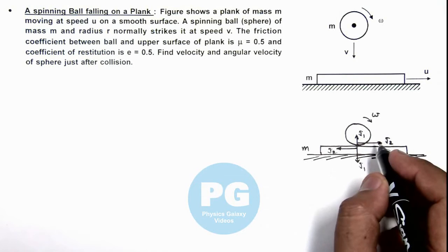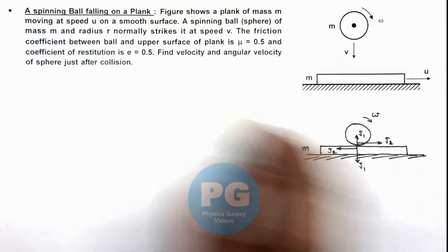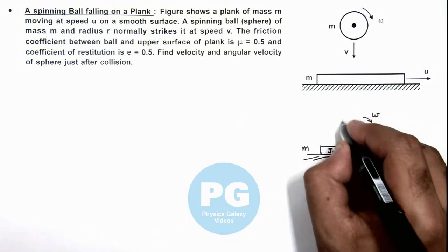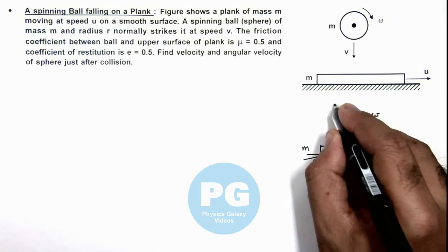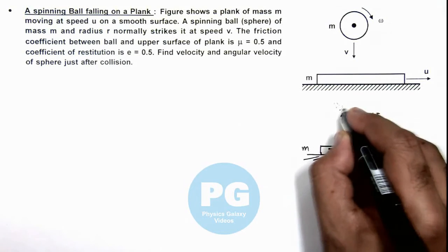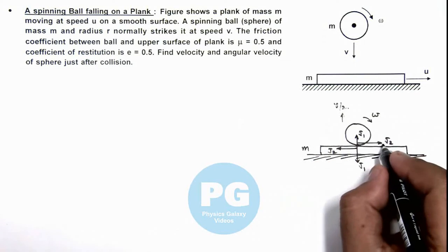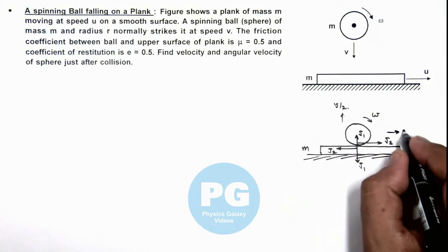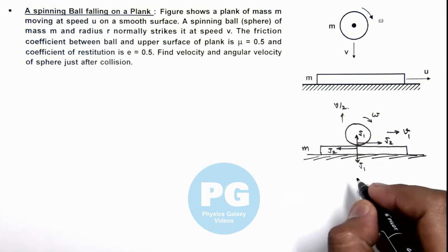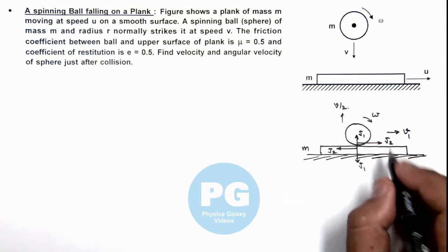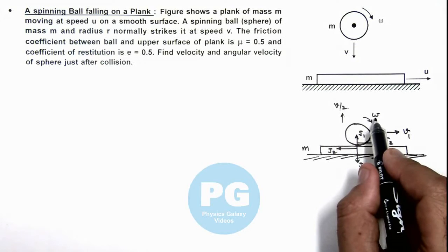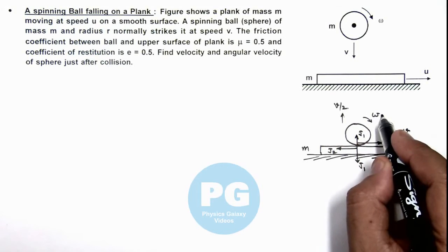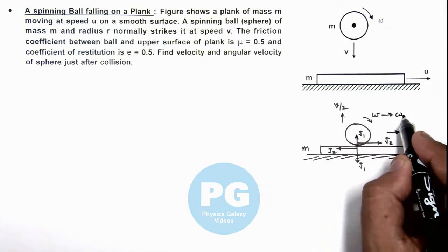By the coefficient of restitution of 0.5, the ball will rebound upward with a velocity v/2. Horizontally, due to J2, it will attain a velocity v1. The angular speed omega will change to omega1.